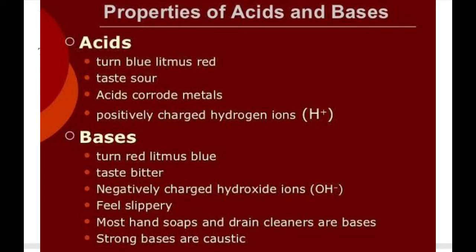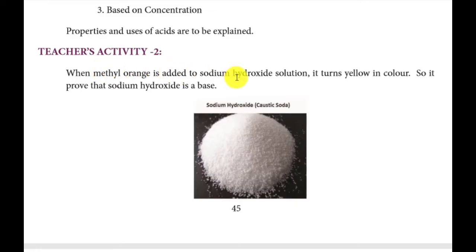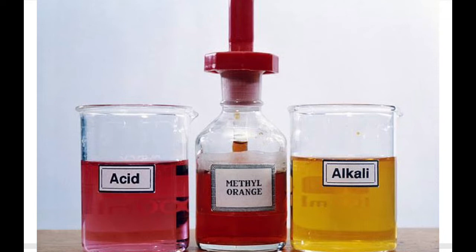The second activity is methyl orange. Methyl orange is a synthetic indicator — a chemical substance that shows color in acid or base medium. When sodium hydroxide solution is added, it turns yellow. Sodium hydroxide is a colorless solution that turns yellow with methyl orange because it is a base.